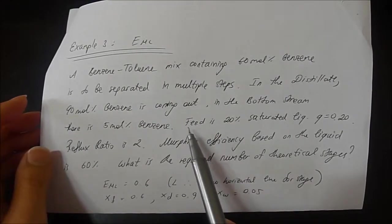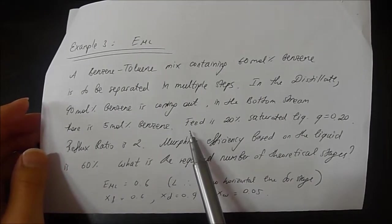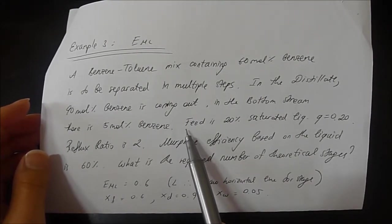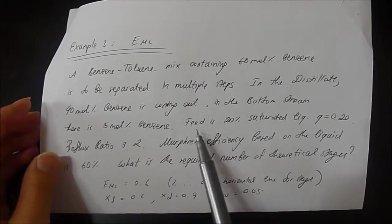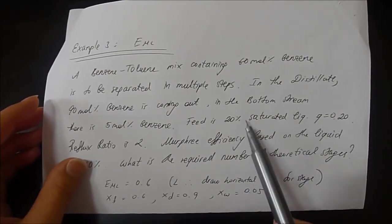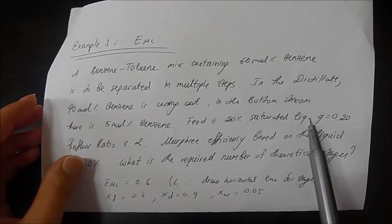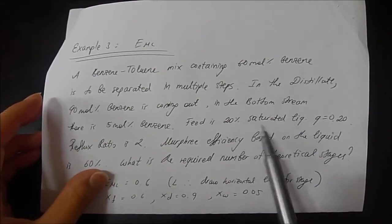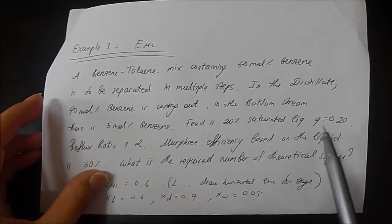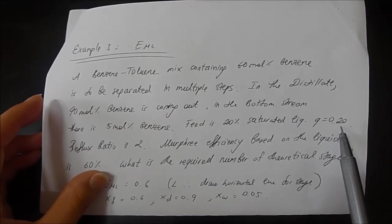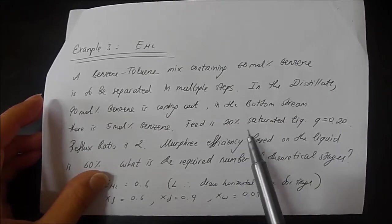In this example, you need to fully understand how the feed quality is going in. Basically, if this is saturated liquid, then we need to vaporize 20% of the feed. So Q equals 0.20, which means 80% is saturated vapor.